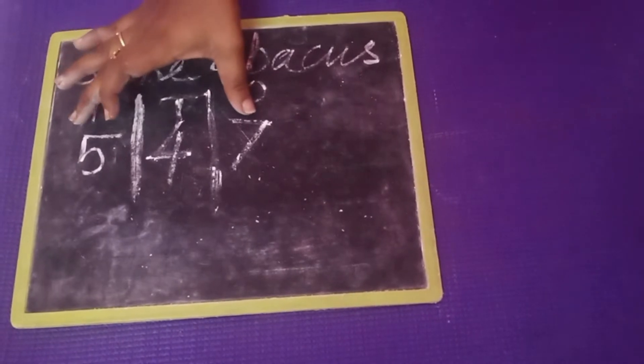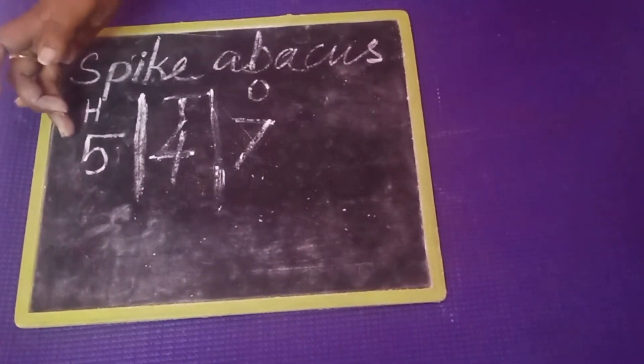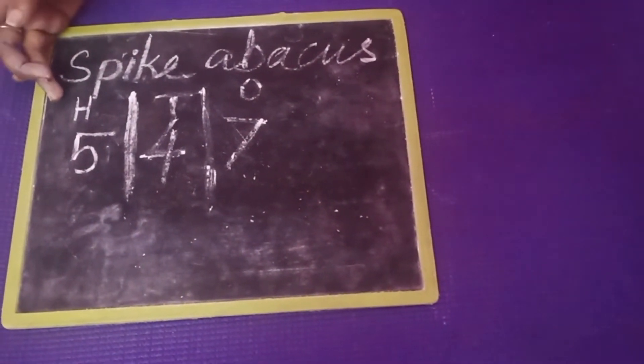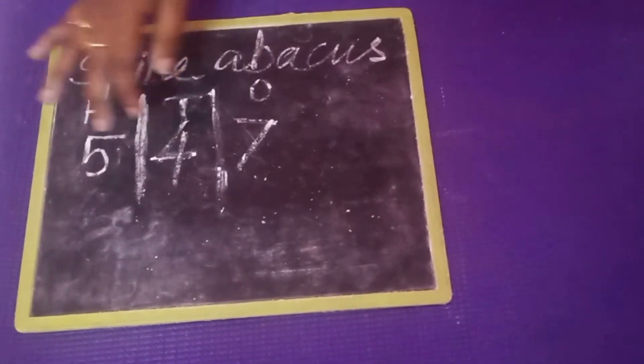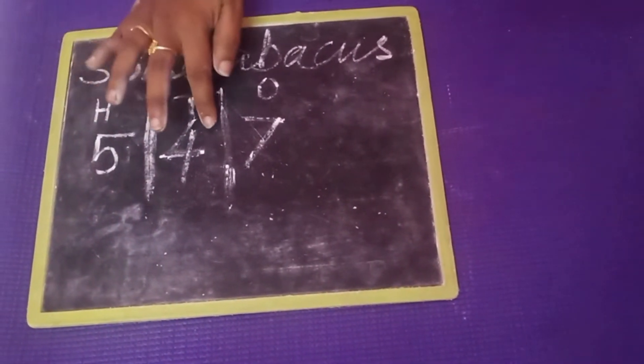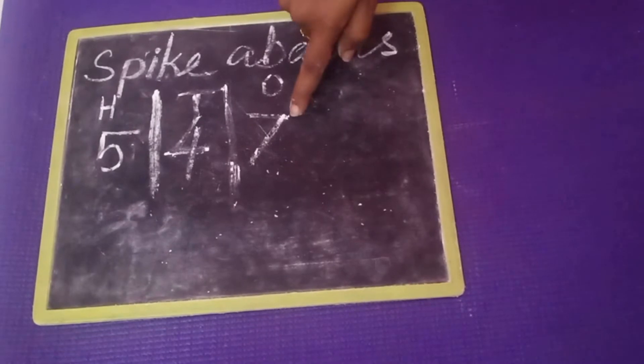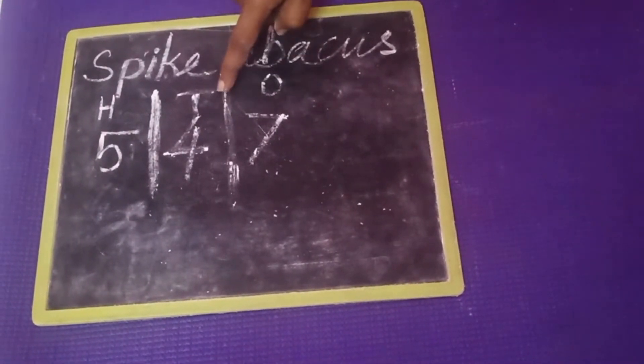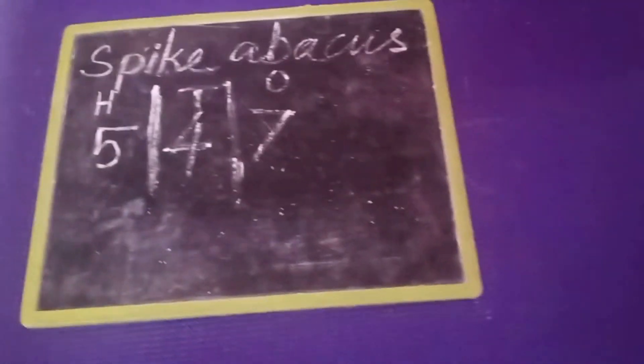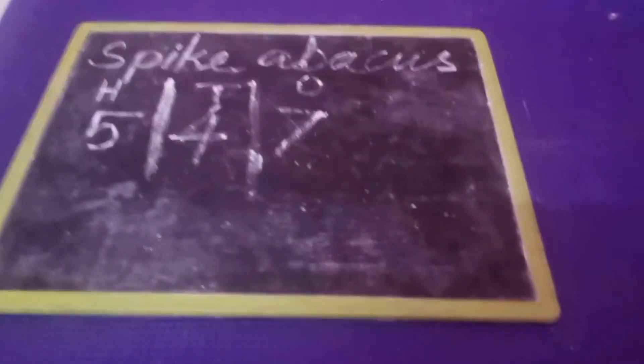So I have written the 3-digit number here. Once you write the number, you have to write the place values on top. What is our number? 547. That is 7 ones, 4 tens, and 5 hundreds.